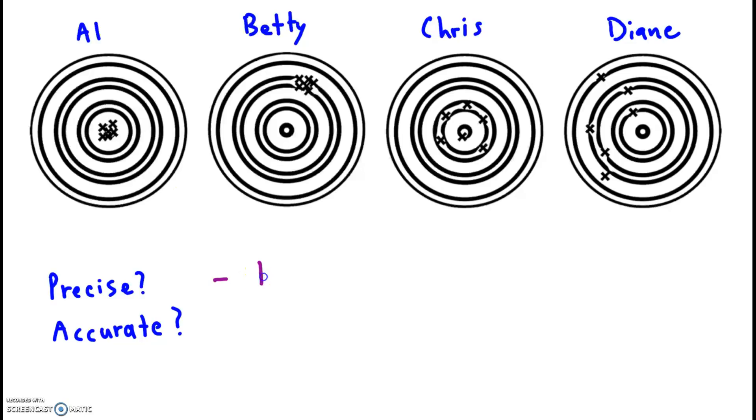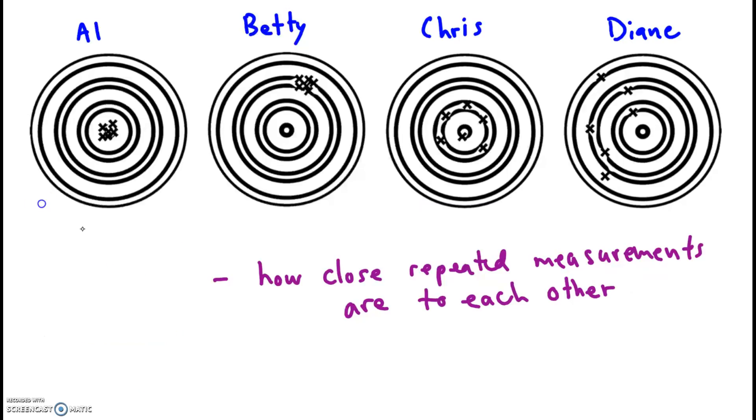Precise is, or precision, how close repeated measurements are to each other. How consistent. So precision, I think of precision as consistency.